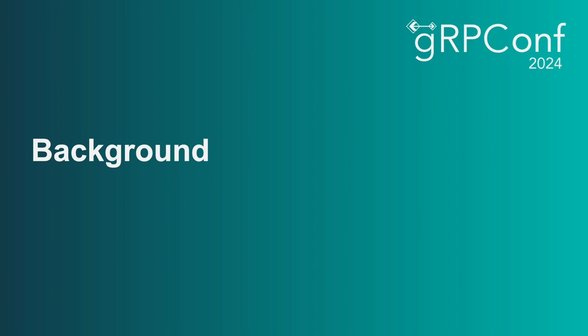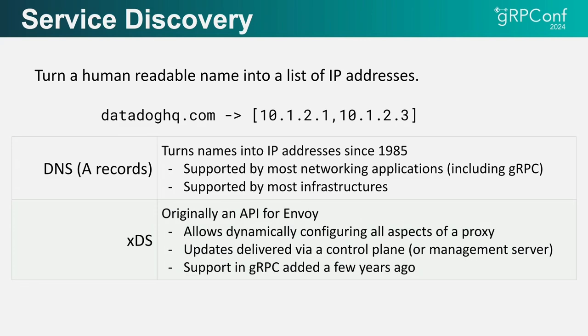I'll start with a little bit of background on what service discovery is. In its simplest form, service discovery just turns a human-readable name into a list of IP addresses that networking applications can then use to connect to a service. By far the most common way to do service discovery is to use DNS. DNS is an old protocol — you give it a name, it gives you an IP address or a list of IP addresses, and it's supported by most infrastructures.